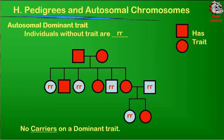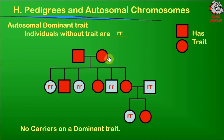Now we've got to do some thinking on the red individuals. The ones colored red have to have a big R, but the question is: are they capital R, capital R — homozygous dominant — or are they capital R, lowercase r — heterozygous? If we take a look at these two parents up here, they have children that are lowercase r, lowercase r, and they have the particular trait. In order for their children to get two lowercase r's, each parent in the first generation must also have a lowercase r. So both of these parents have to be big R, lowercase r, because that's the only way they could have the trait and then pass on the lowercase r's for their children to not have the trait.